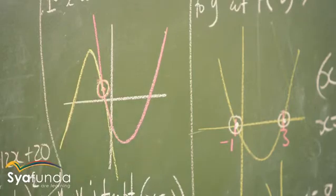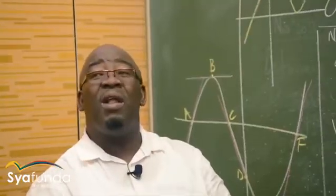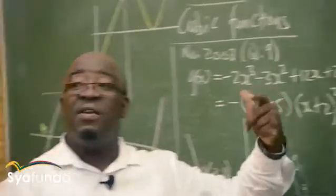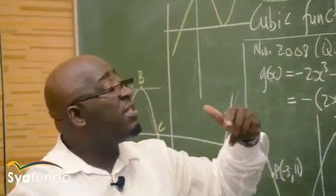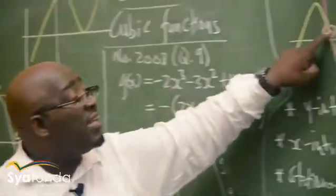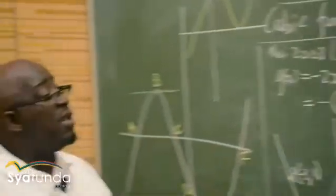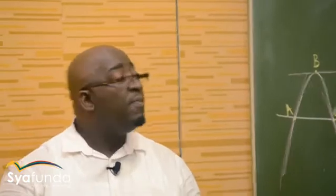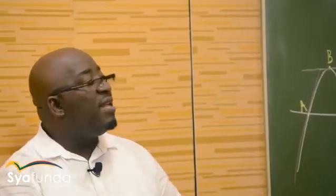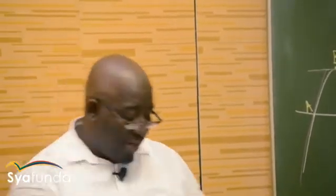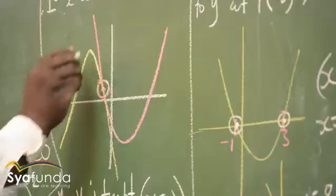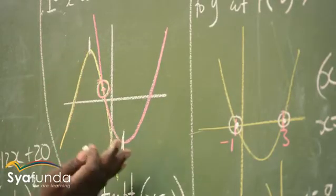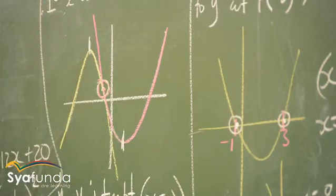So how do you calculate the point of inflection? Remember, to calculate the point of inflection you find the second derivative. Another method of finding the point of inflection: you take your x value at one turning point, add it to the x value at the other, then divide by 2. This will also give you the point of inflection.